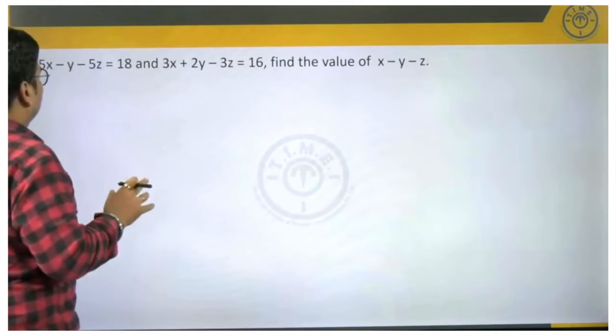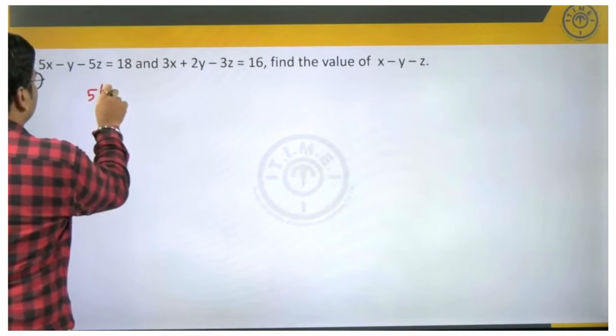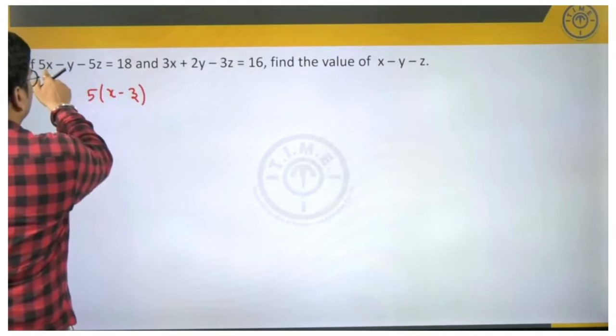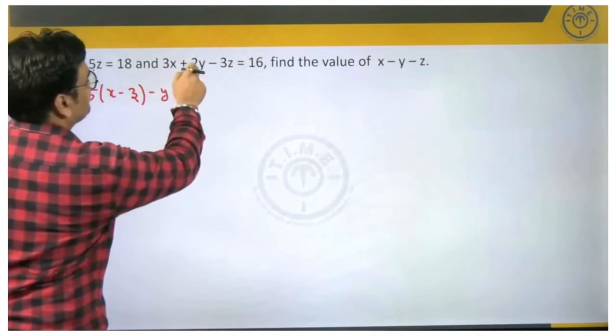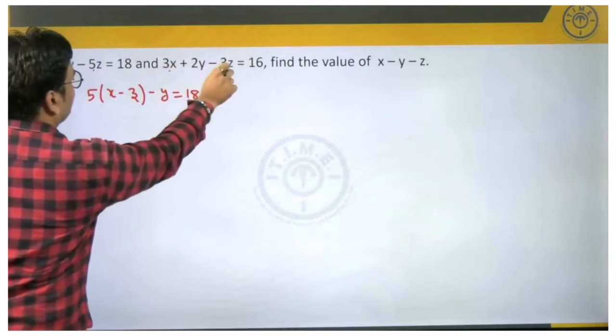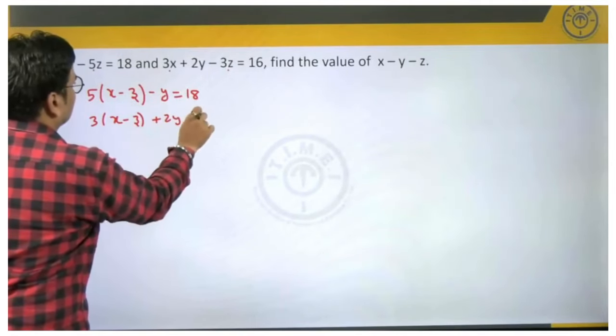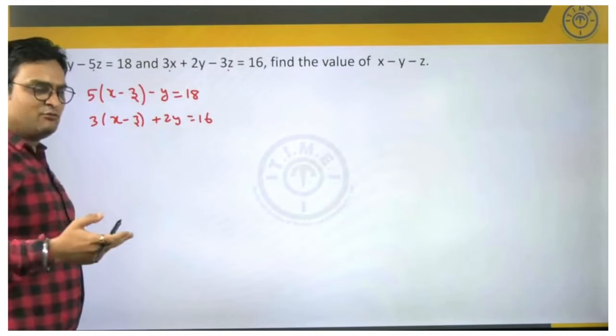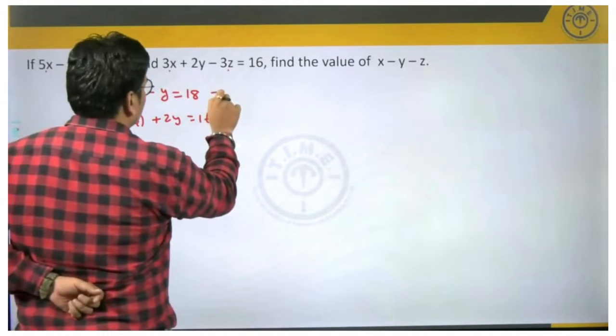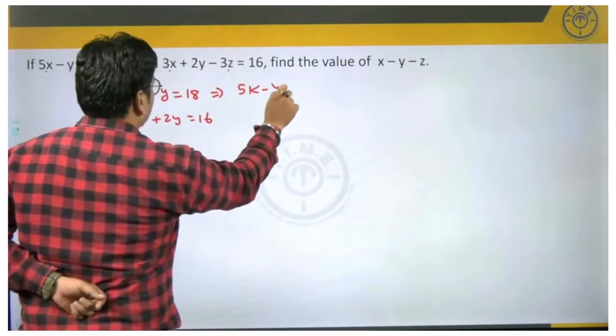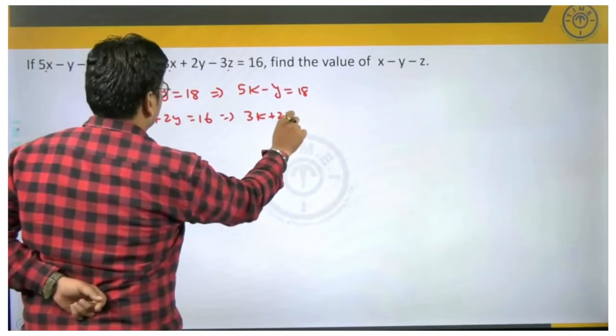Now, looking at the equations and the way in which they are structured, can we write the first equation as 5 into (x minus z), I am taking 5 common, minus y is 18. And second equation again, can I take 3 common, 3(x-z) + 2y is 16. Let us do one more thing. Let us call this x minus z as some other variable k. So this equation changes to 5k minus y equal to 18 and this will be 3k plus 2y equal to 16.